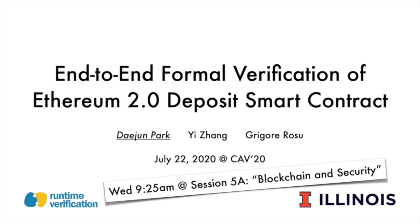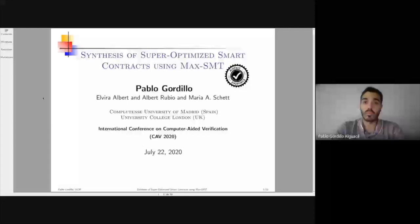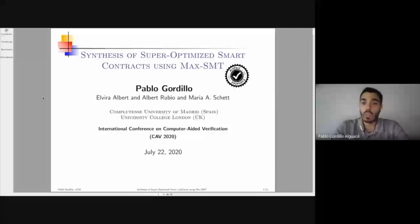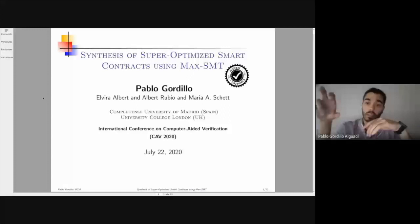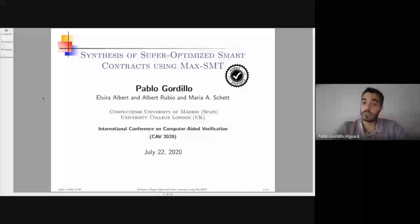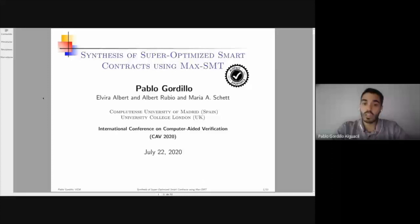I'm Pablo Gordilla, and I'm going to present our work, Synthesis of Super-Optimized Smart Contracts Using MaxSMT, on July 22nd. I'm going to show you our method to super-optimize EVM bytecode. We take the sequence of EVM instructions and produce a description of the initial and the target stack before and after executing the sequence. We use this description to generate a MaxSMT encoding that allows us to automatically find a new sequence of EVM instructions that produce the same stack but consume less gas than the original one, allowing us to save money.